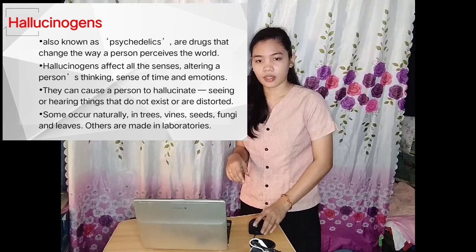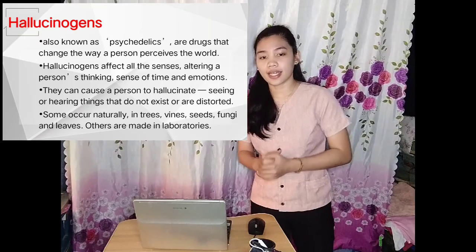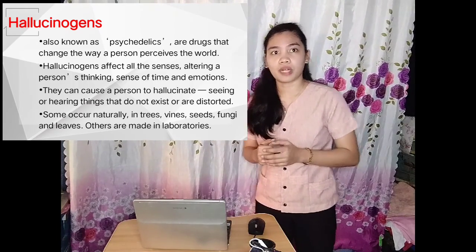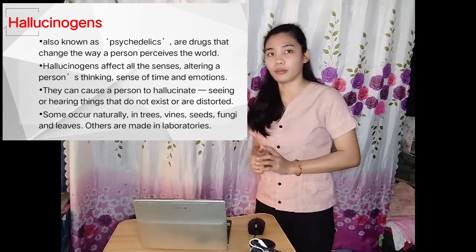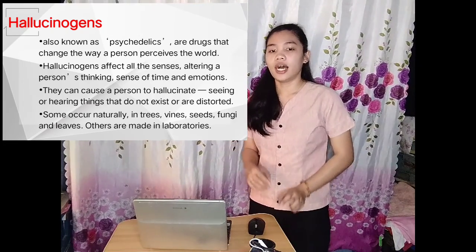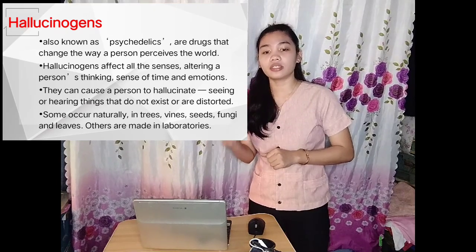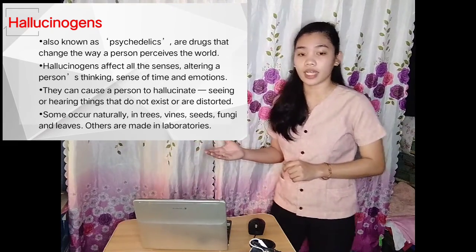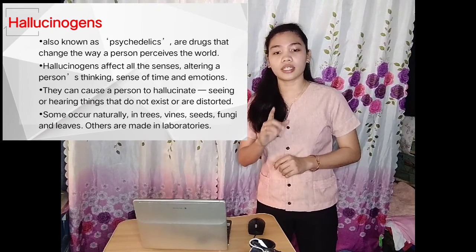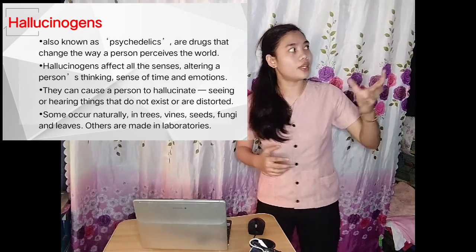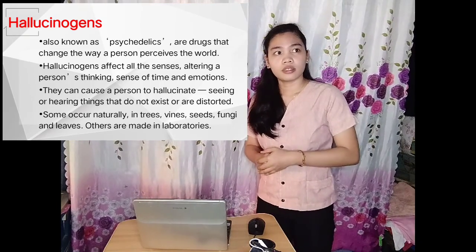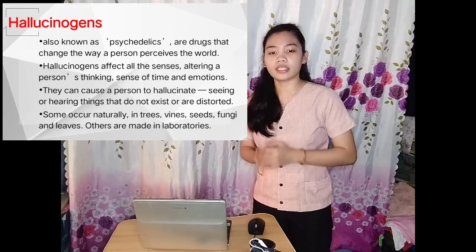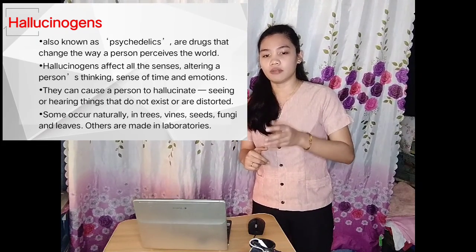For the next category, hallucinogens — also known as psychedelics — are drugs that change the way a person perceives the world. The way they see things is very different compared to people who don't use this drug. Hallucinogens affect all senses, altering a person's thinking, sense of time, and emotions. They can cause a person to hallucinate — seeing or hearing things that do not exist or are distorted. For example, they might see a chair moving or disappearing. Some hallucinogens occur naturally in trees, vines, seeds, fungi, and leaves, while others are made in a laboratory.